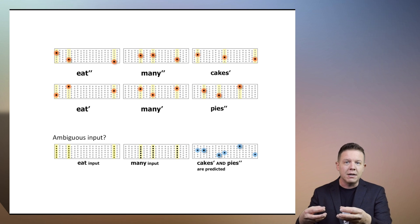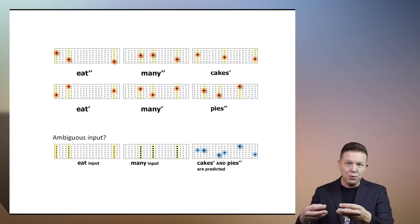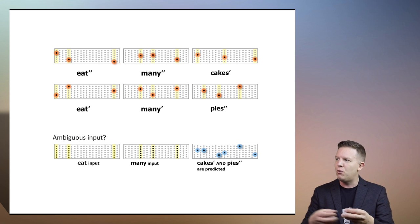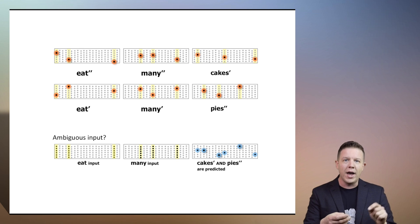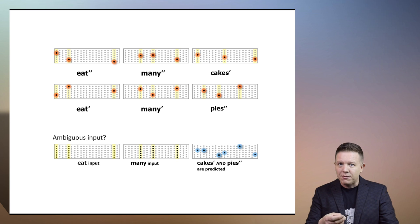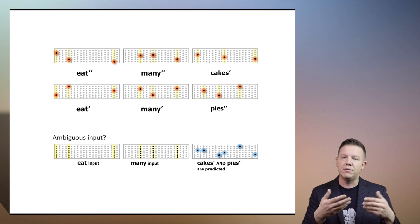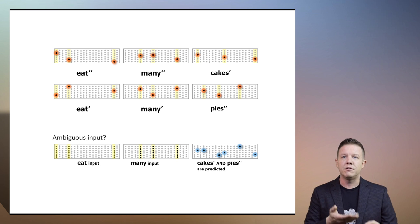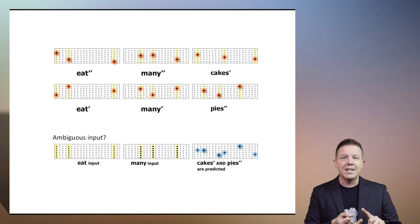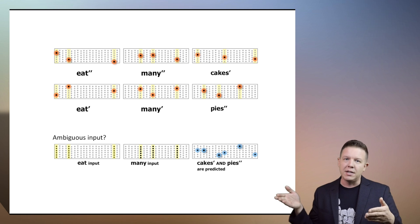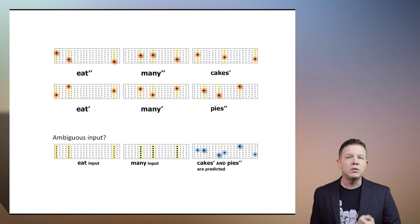the system still knows — well, I've seen eat many in two different ways. So I know that in one way, pies follows. In another way, cakes follows. So it gives you the representation for both pies and cakes within the context of those two temporal sequences.